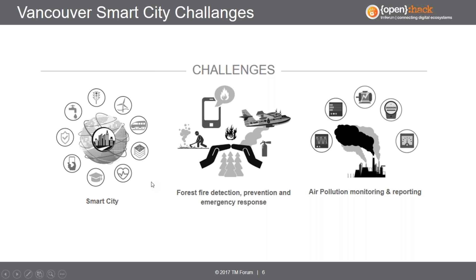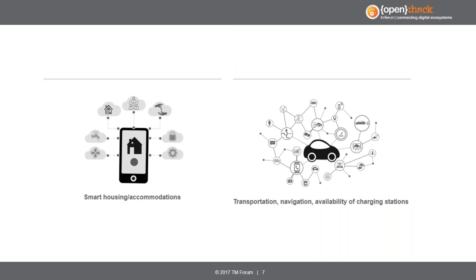Our ambition is to see how we can make this technology available to help improve the lives of the citizens of Vancouver. General smart city applications are all deemed relevant: how to make citizens' lives better, forest fire reduction and reduction in response time for emergency services, air pollution monitoring and reporting — a particular issue across many cities in the world, particularly for people with respiratory issues. The City of Vancouver has some very good data portal content particularly on air pollution monitoring. Other challenges mentioned include smart housing and accommodations, as well as transportation and navigation.